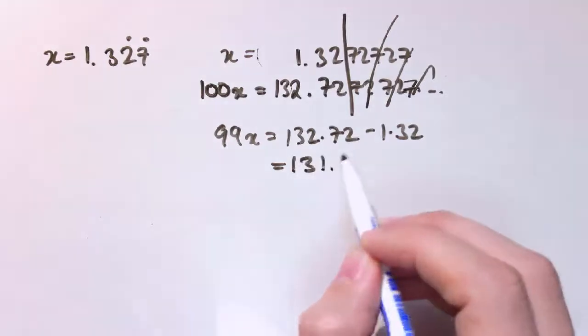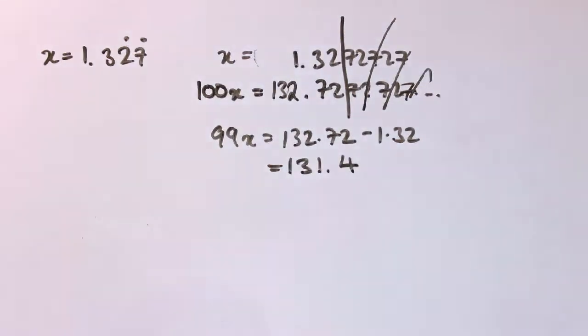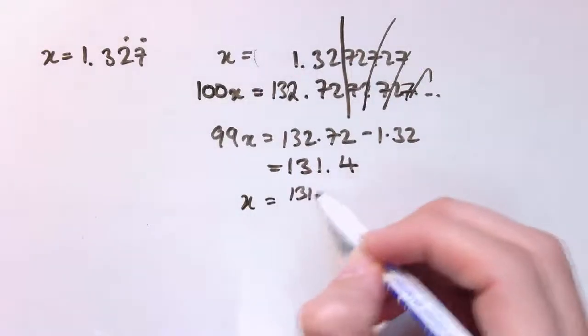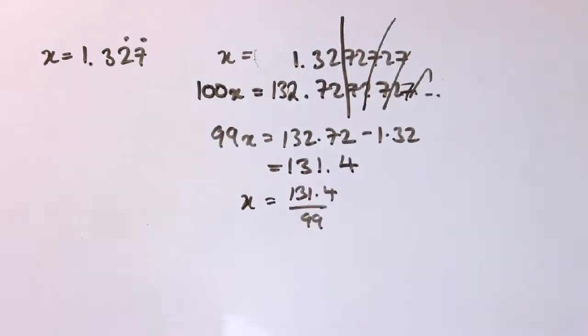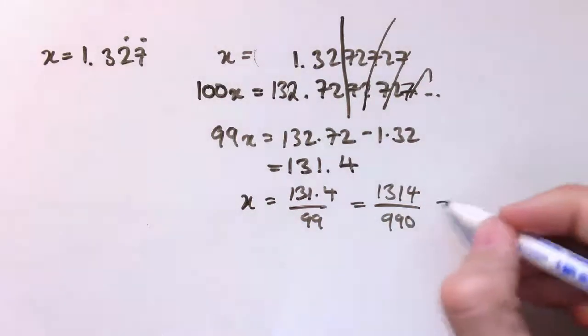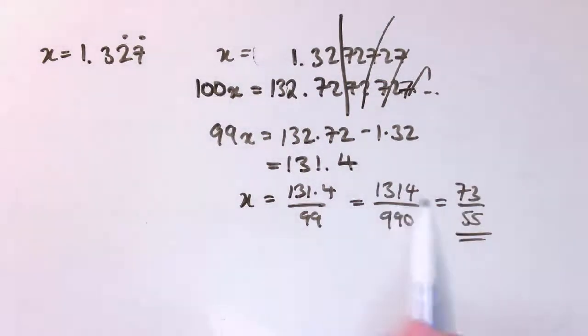From this point onwards it's going to repeat together. So when I subtract this one from this one, all of this stuff goes away and I'm just left with 132.72 minus 1.32, which is 131.4. So x equals 131.4 over 99. We should really say this is 1314 over 990, and that does simplify down to 73 over 55.